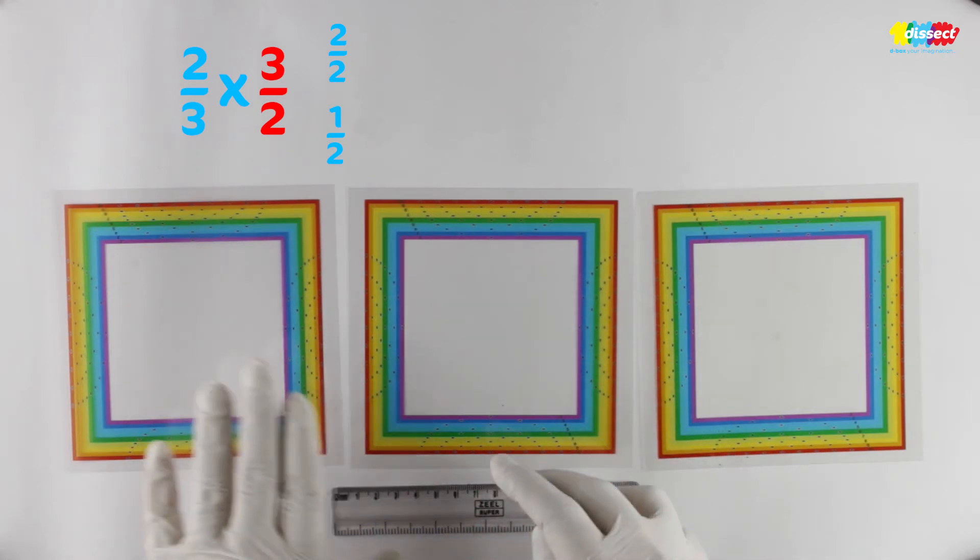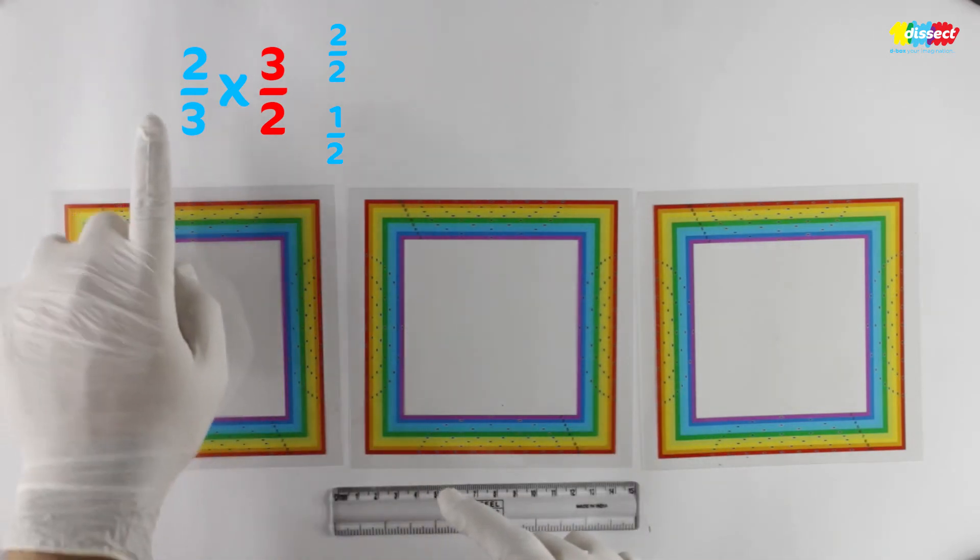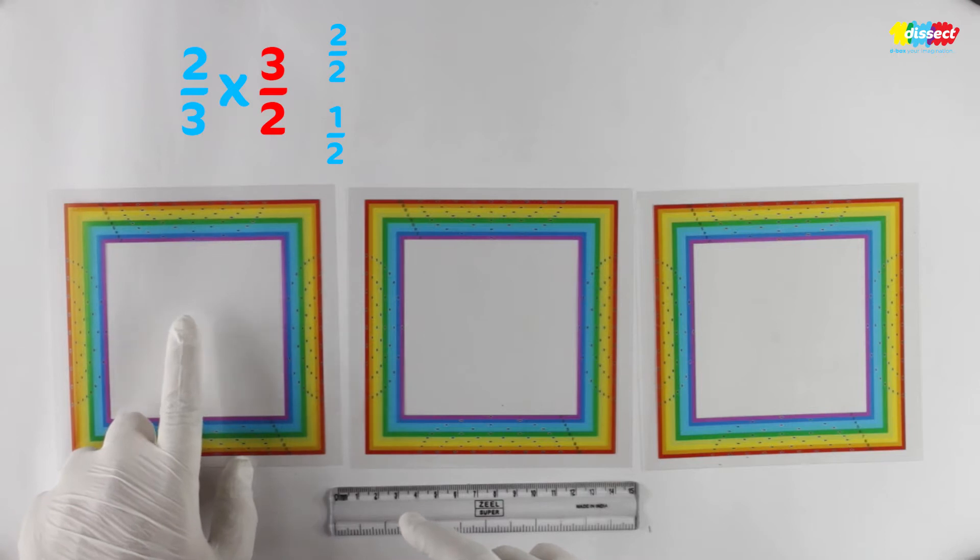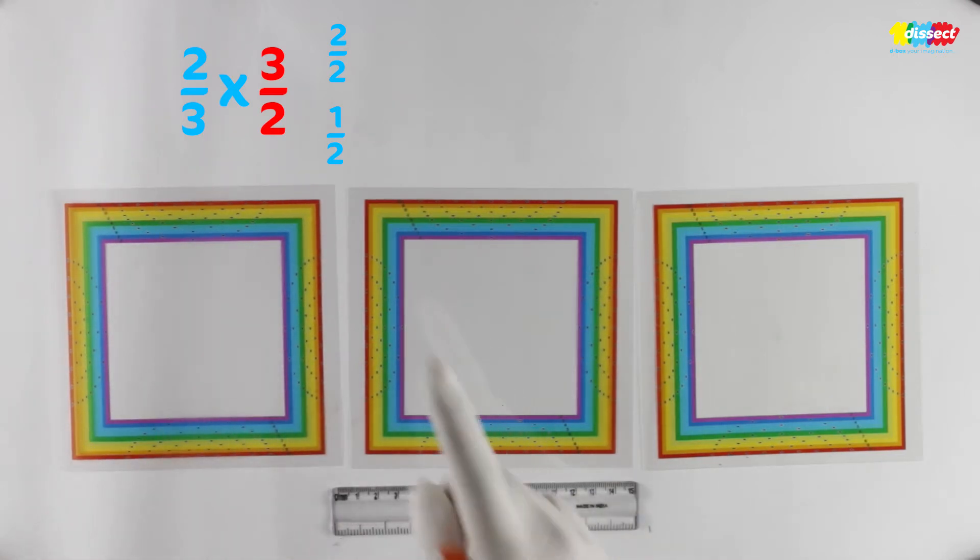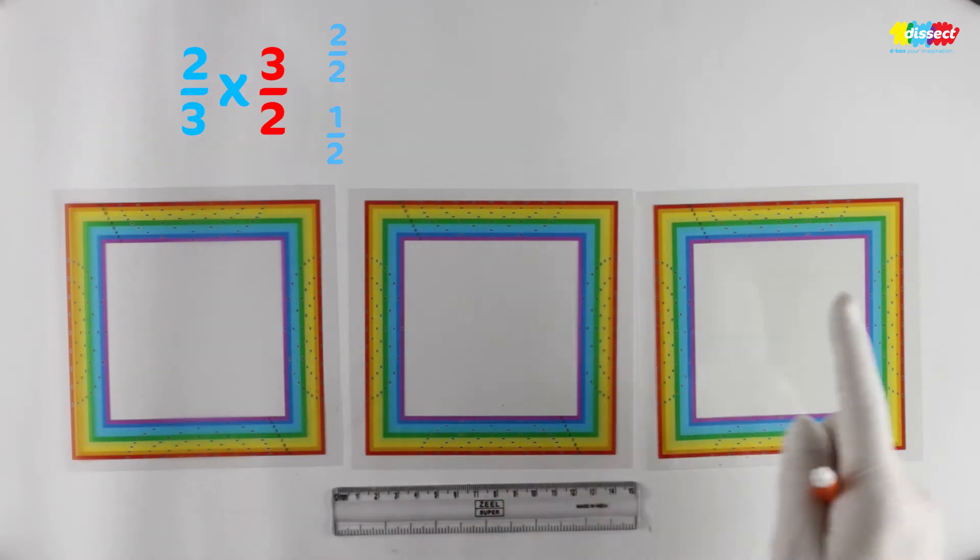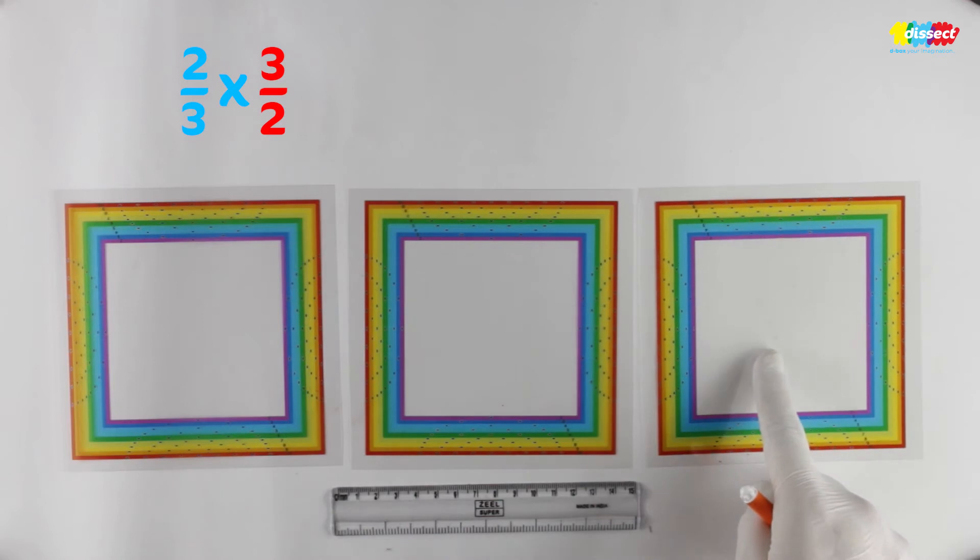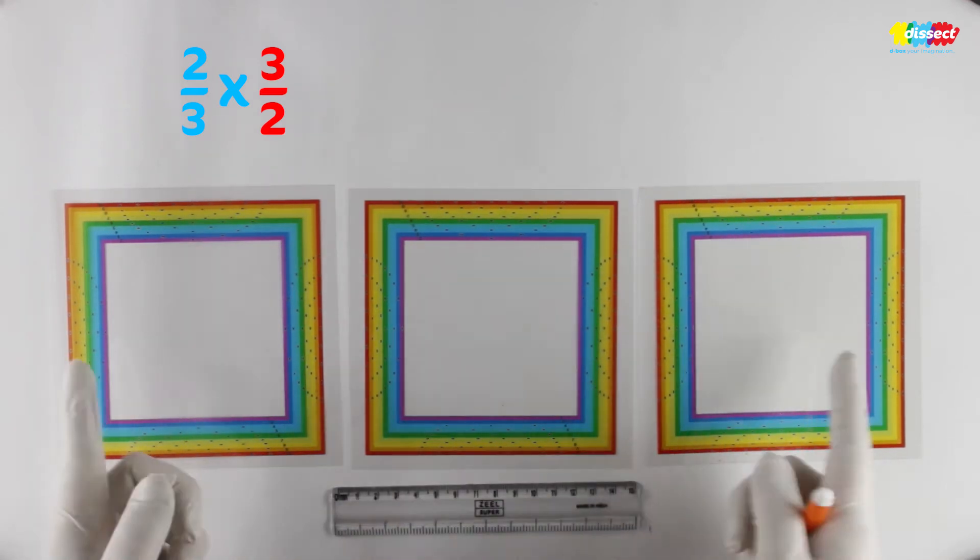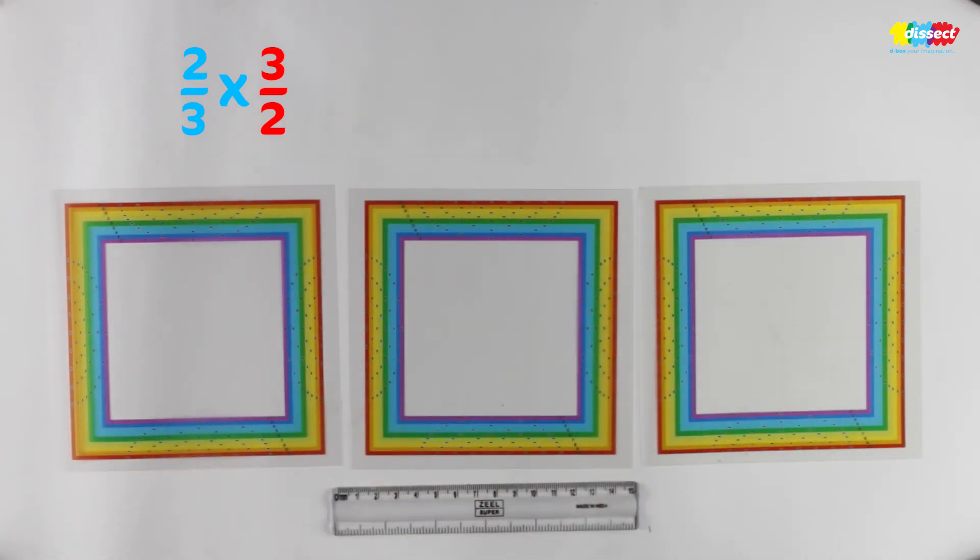So what we are going to do is we will represent the 2 by 3 on one of the transparencies. We will represent the 2 by 2 on the second transparency and we will represent the 1 by 2 on the third transparency and let's see how we will use all those 3 to multiply these two numbers.